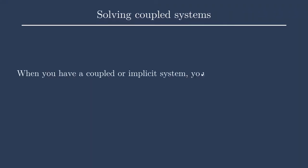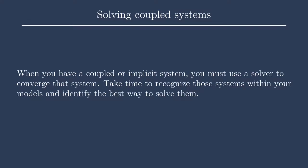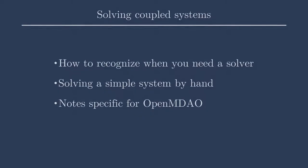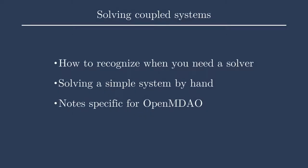When you have a coupled system or an implicit system, you must use a solver to converge that system. We're going to show you how to recognize when you have a coupled or implicit system in your model, when you need a solver, and then I also have a few notes about how to identify coupling within OpenMDAO.